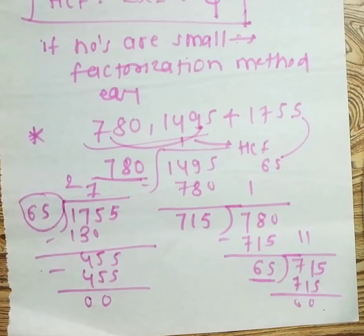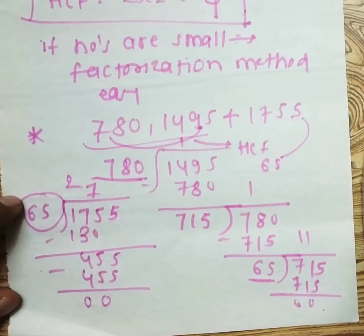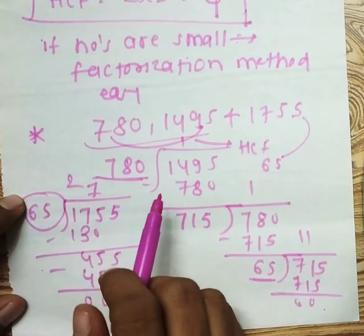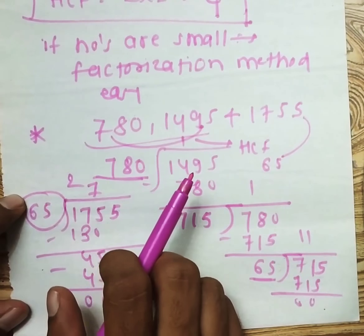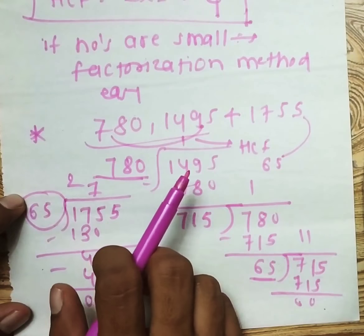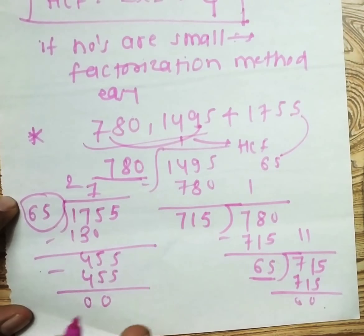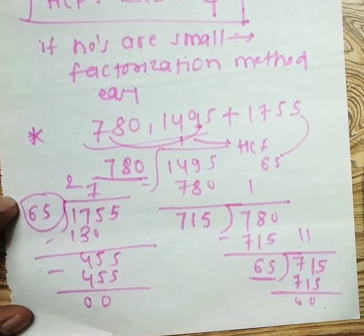This method is very simple — we can calculate it within one minute. If you used the factorization method for these large numbers, it would be very lengthy. So the division method is easy when the numbers are large.